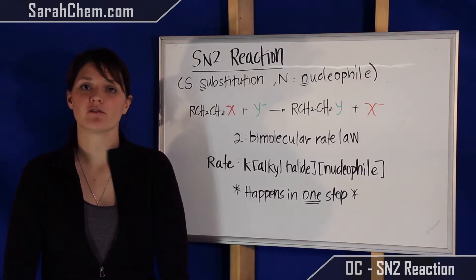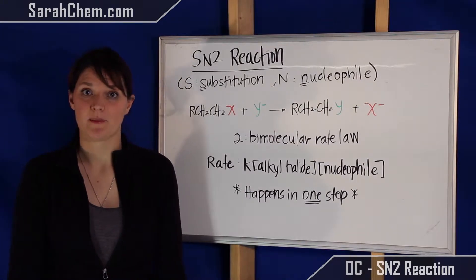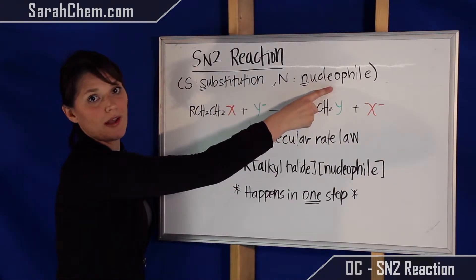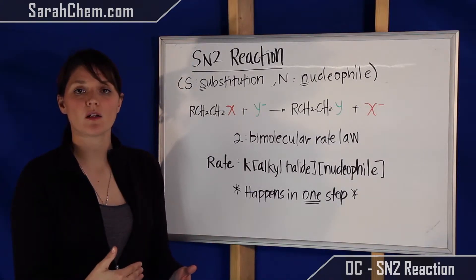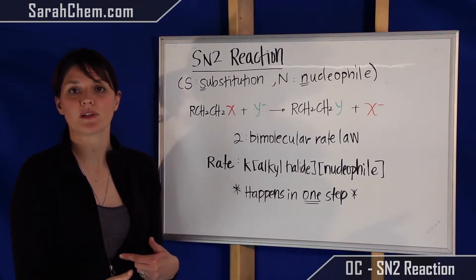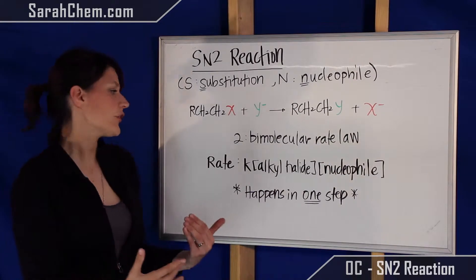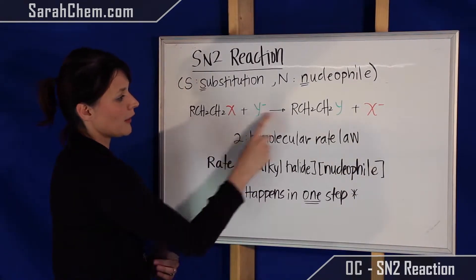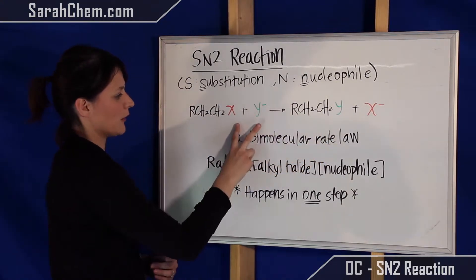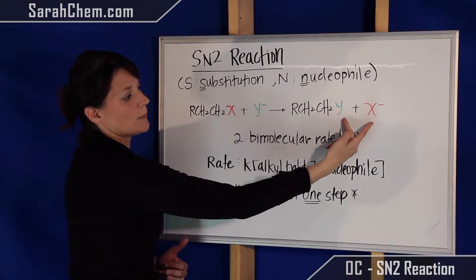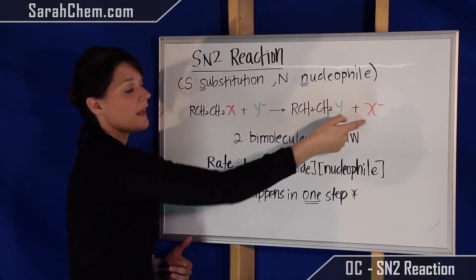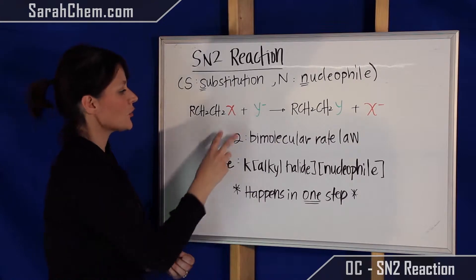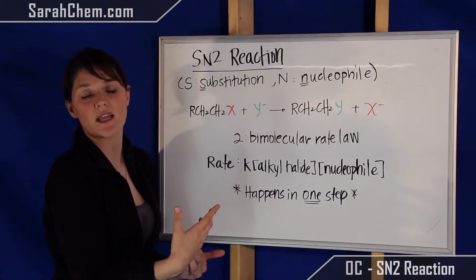The first thing I want to do is just break down each of the letters of the name. S stands for substitution and N stands for nucleophile. What that means is basically a nucleophile will be substituted out and replaced with a different nucleophile. As you can see over here, the substitution occurs where first X is part of the compound and now Y is part of the compound — these two basically swapped roles. There's your substitution, and they're both nucleophilic in character, electronegative or electron withdrawing. That's where the nucleophilic portion of the name comes in.